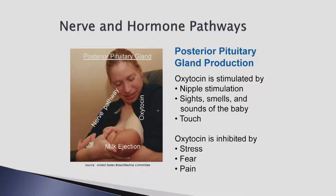This contraction is not limited to the breast; some women feel uterine cramping during letdown as oxytocin is released into the bloodstream. With each pregnancy, the uterine contractions can be more intense. Uterine contractions decrease in intensity within the first weeks as the uterus returns to its pre-pregnancy size. Oxytocin has a calming effect on the mother — some mothers appear to drift off or doze when oxytocin is released and milk ejection occurs.